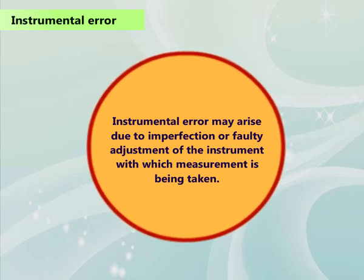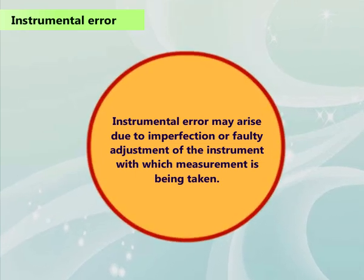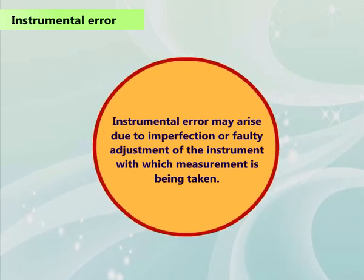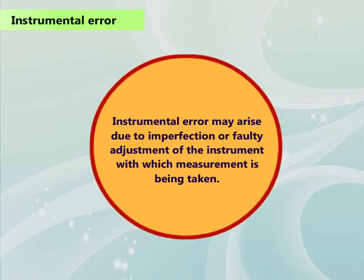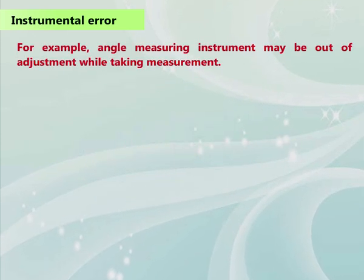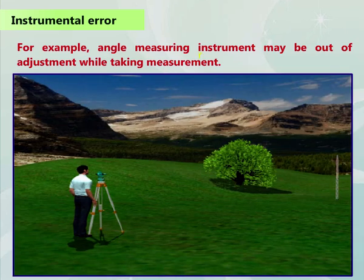Instrument error may arise due to imperfection or faulty adjustment with which measurement is being taken. For example, an angle measuring instrument may be out of adjustment while taking measurement.